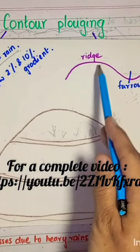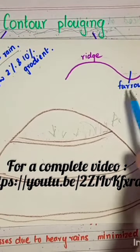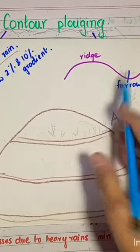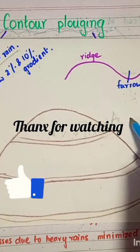Now what is the furrow? Furrow basically allows the water, the rainwater which is running down the hill slope, to sit in and infiltrate into the soil.